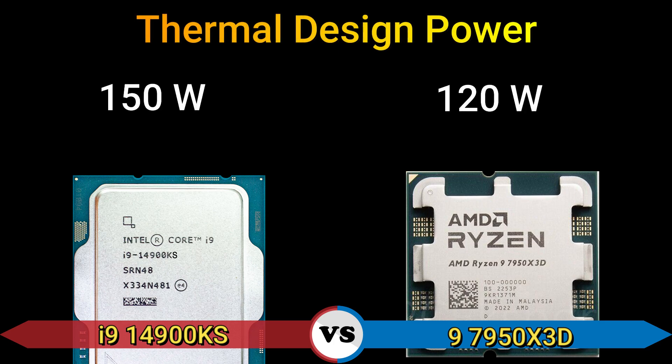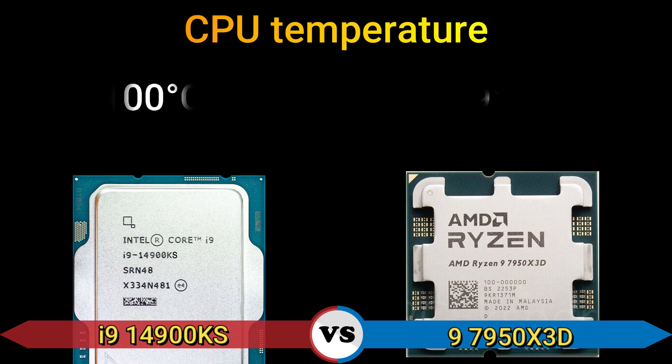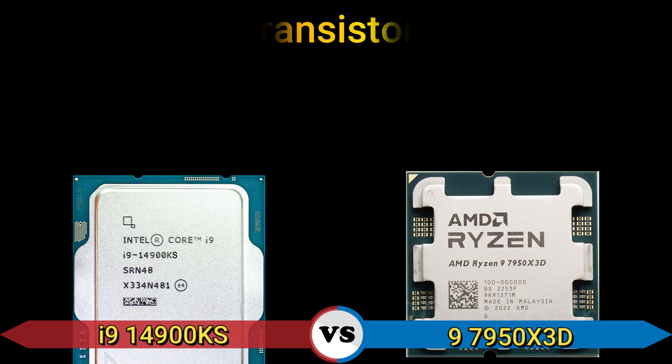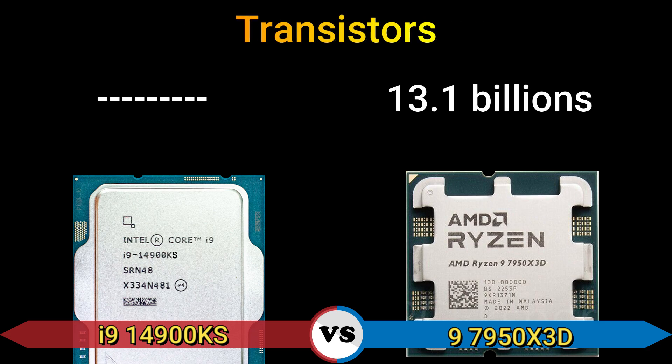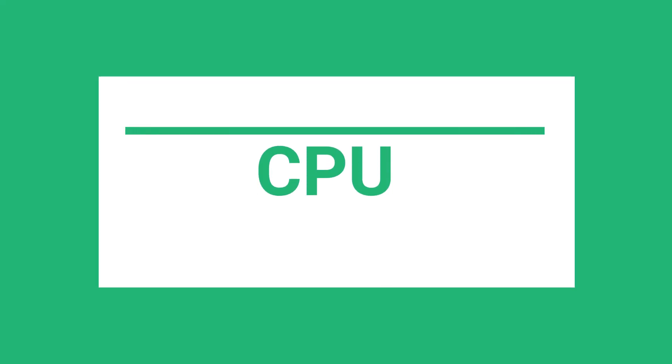Thermal design power: 150 watt and 120 watt. CPU temperature: 100 degrees Celsius and 89 degrees Celsius. Transistors: 13.1 billion. Part two: CPU.